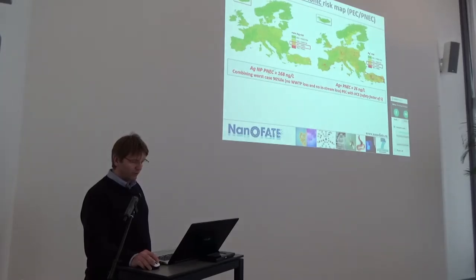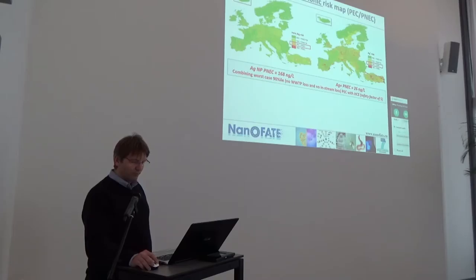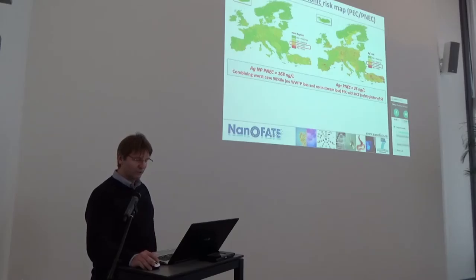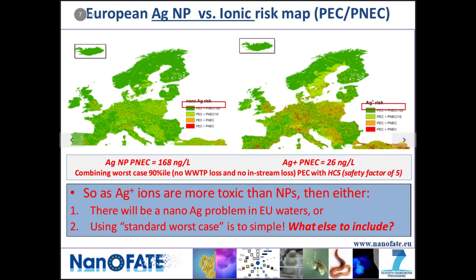These are the concentration maps we produced, and from the hazard data we get PNEC values — predicted no effect concentrations — for silver nanoparticles. If you take it down to silver ions, it's more toxic by a reasonable factor. Assuming nanoparticles are present, you can see red and orange areas in Europe where predicted environmental concentrations exceed or approach the PNEC. If you assume it all dissolves to ions, there's suddenly a much bigger problem. So either there is a nano problem in EU waters, or using standard worst cases, the model is too simple.